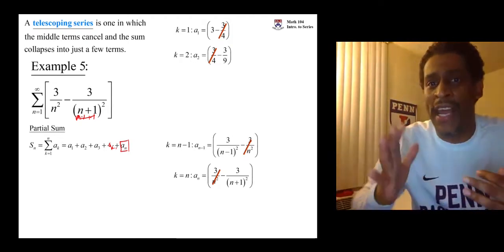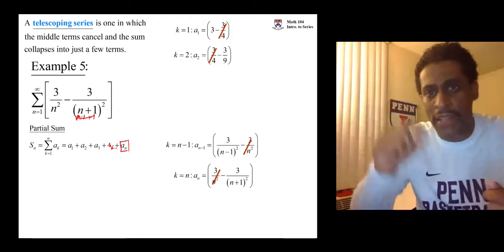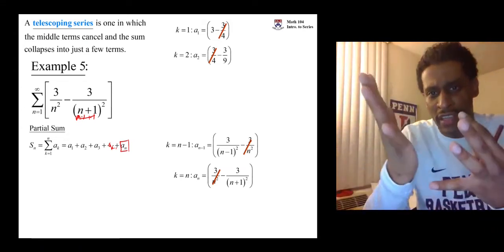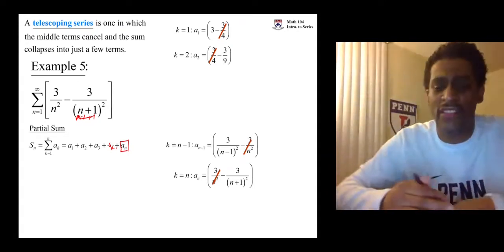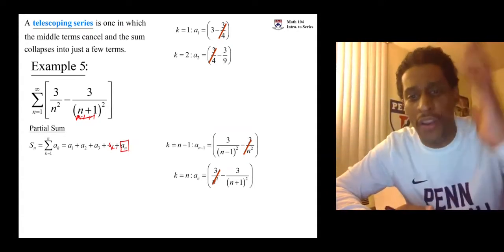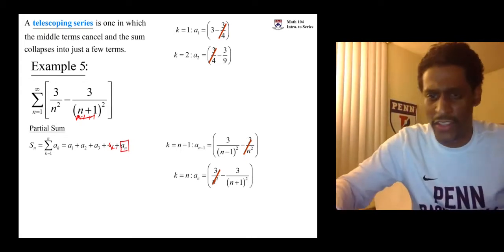You see, any term that has a counter or a subscript basically that's going to be higher than the k equals 2 is going to be used to cancel. Any term that has a subscript or a counter lower than n minus 1 will be canceled out. Let's see how that's going to work.